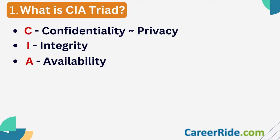Question number one: What is CIA triad? One of the very basic questions usually asked at the interviews. CIA triad is a model that works as the basis of security systems. C here refers to confidentiality, which in today's world has become a close synonym of privacy whenever we talk in terms of security. It means that the data or the information is secret and is revealed only to the authorised people.